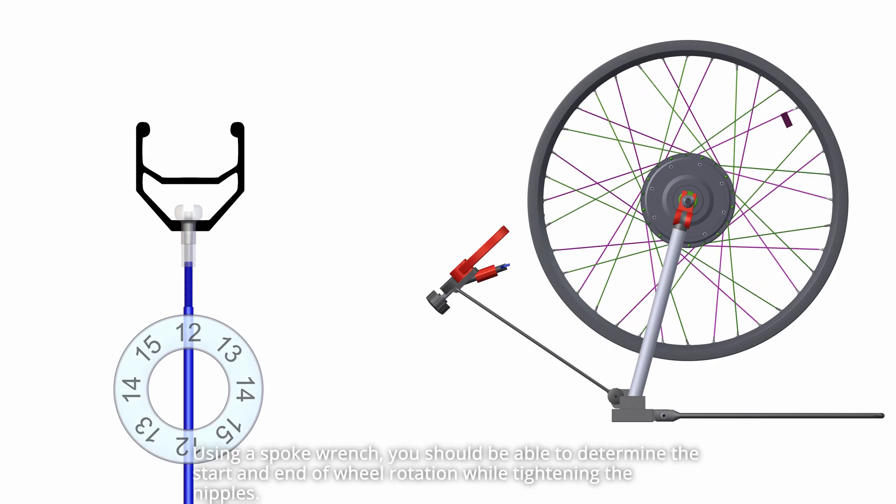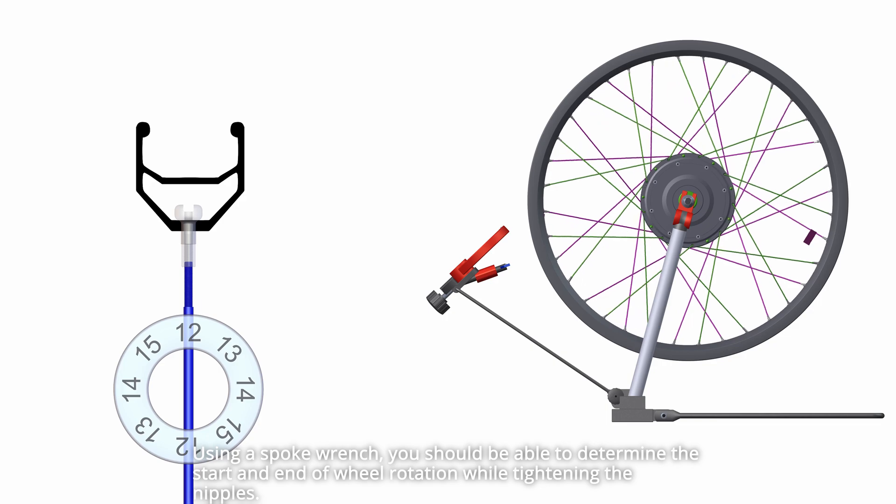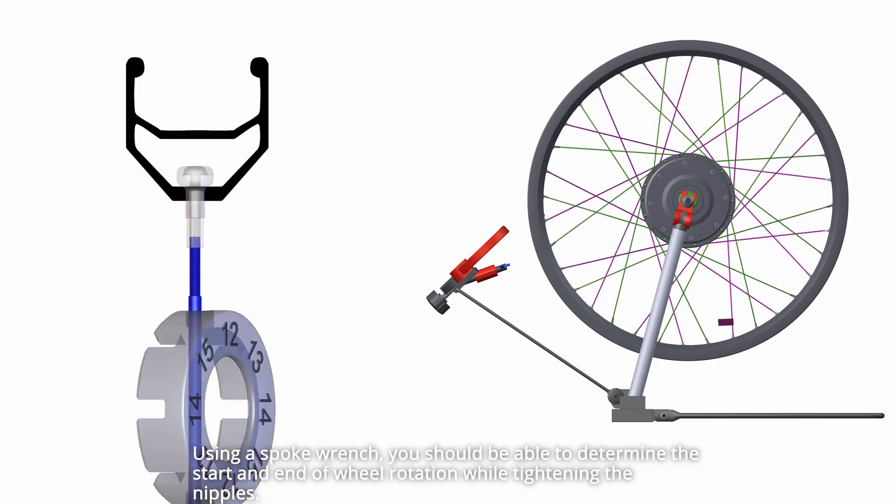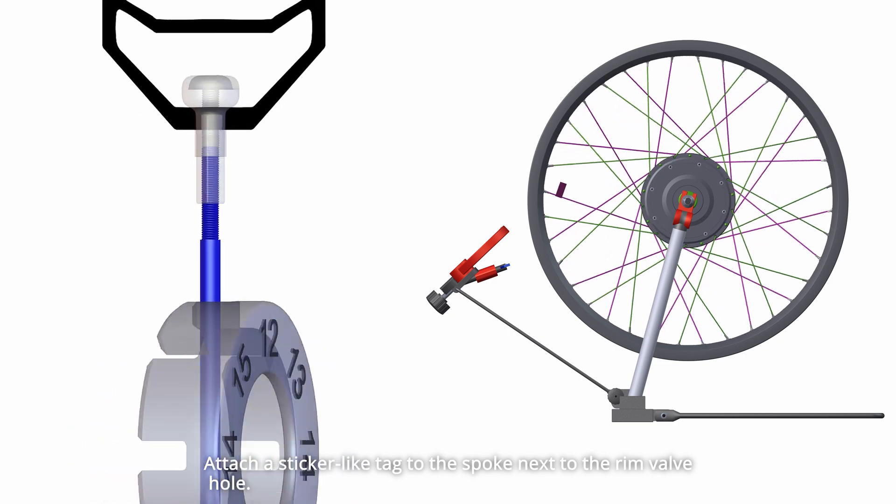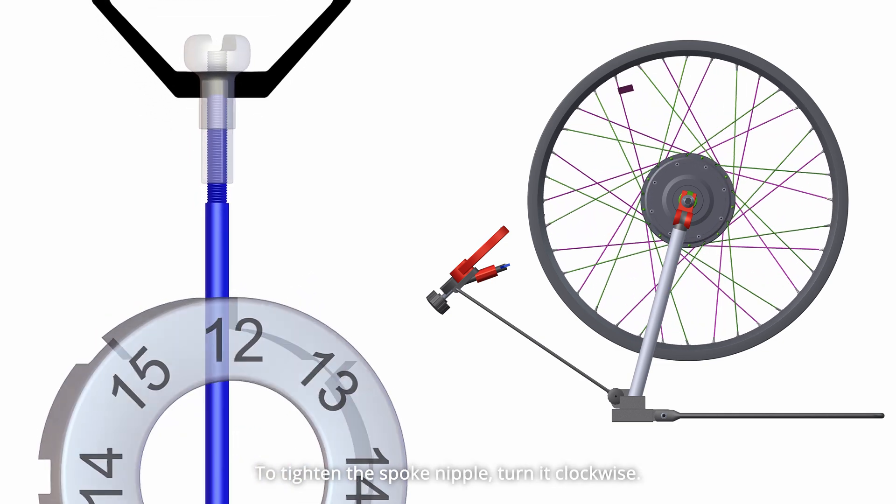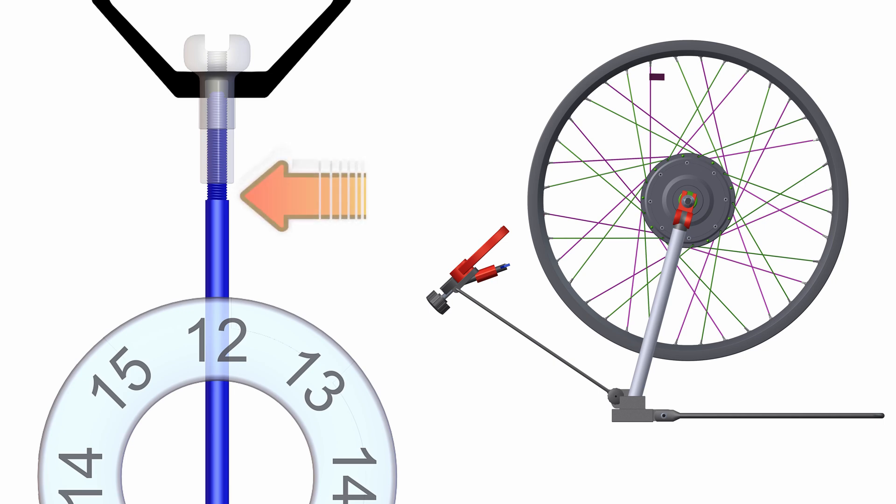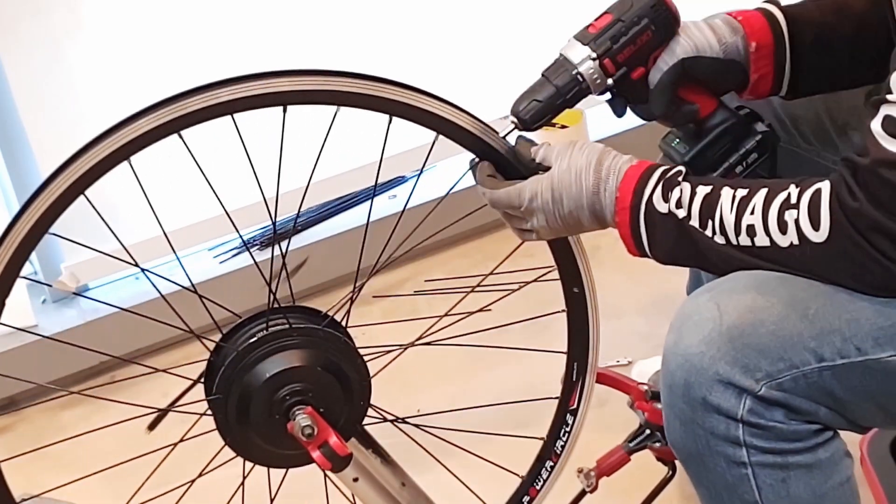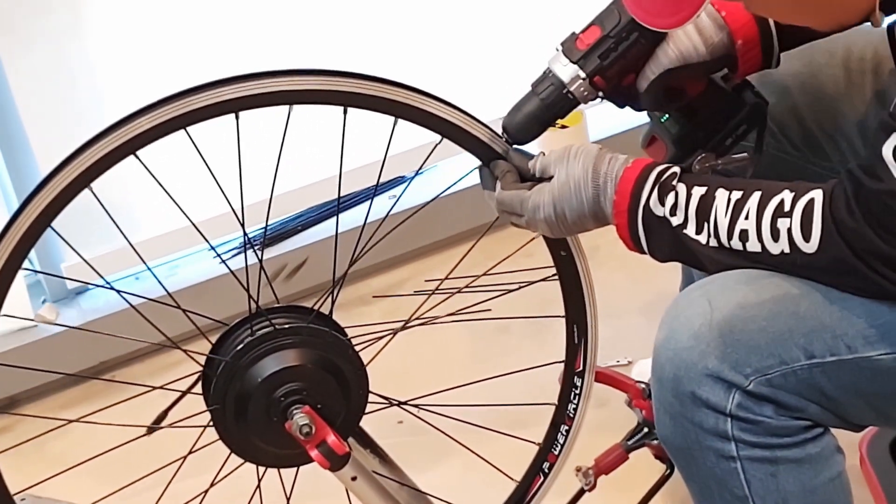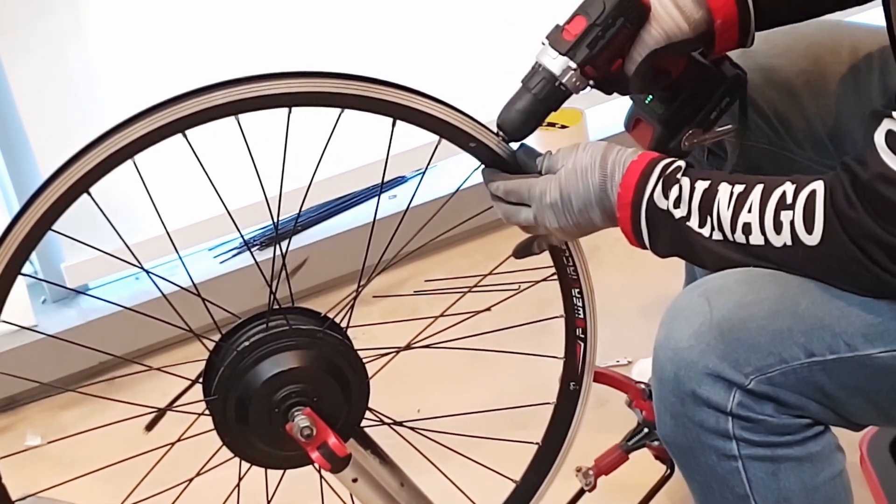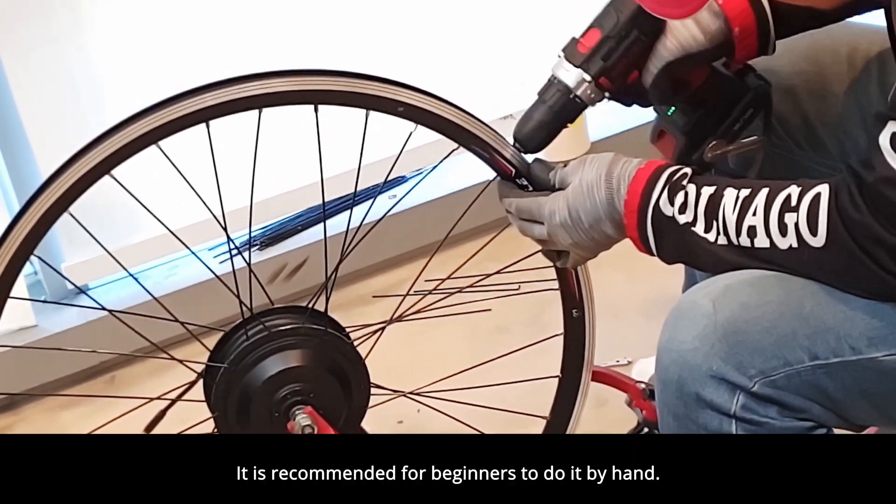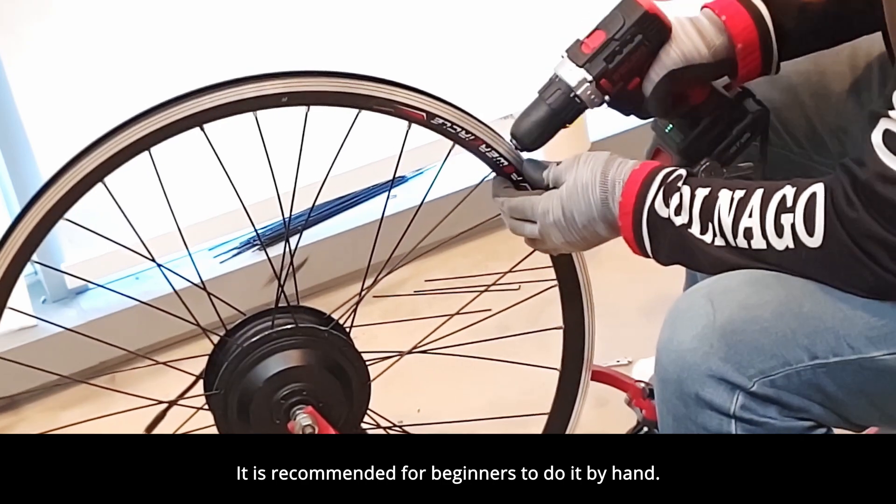Using a spoke wrench, you should be able to determine the start and end of wheel rotation while tightening the nipples. Attach a sticker-like tag to the spoke next to the rim valve hole. To tighten the spoke nipple, turn it clockwise. Tighten all the nipples while leaving a 1mm spoke thread. It is recommended for beginners to do it by hand.